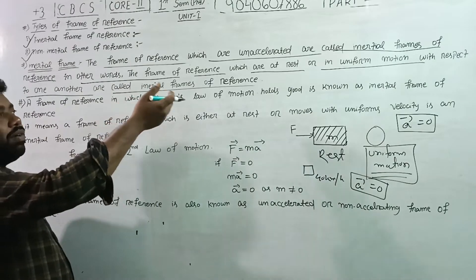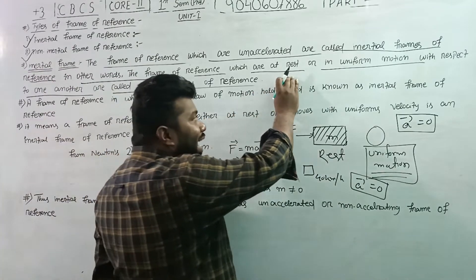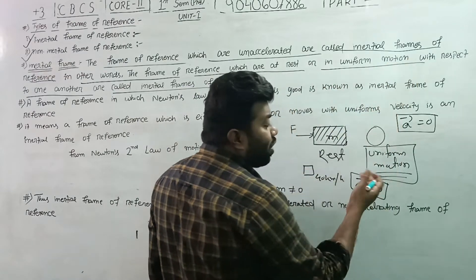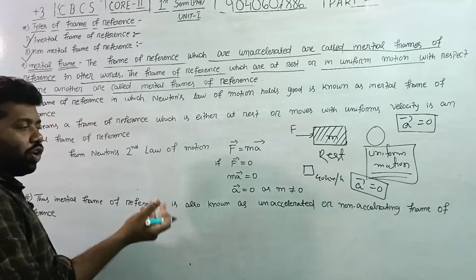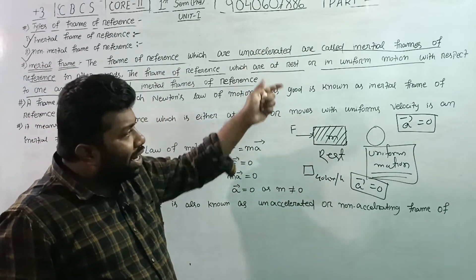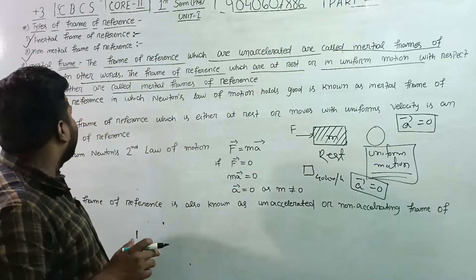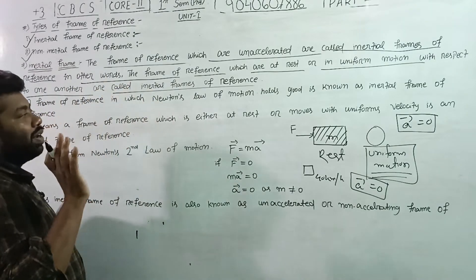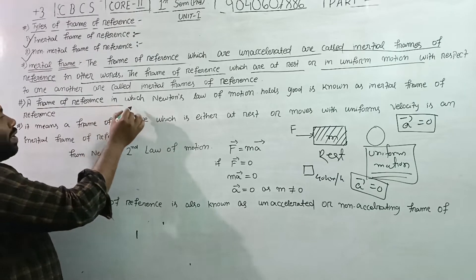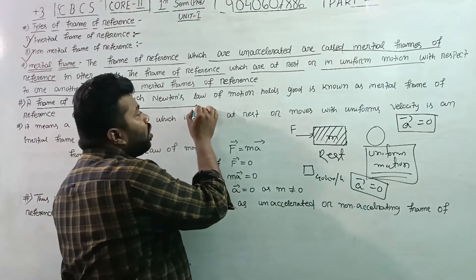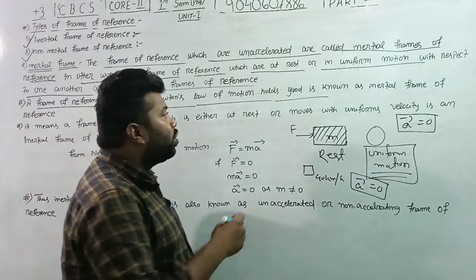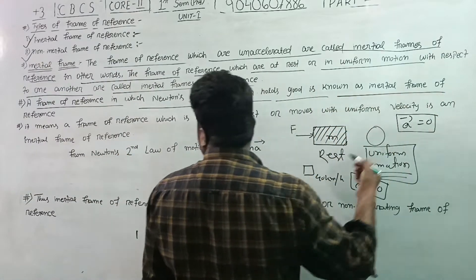In other words, the frame of reference which is at rest or in uniform motion — with acceleration equal to zero — is called the inertial frame of reference. This is the frame of reference in which Newton's law of motion holds good, meaning Newton's law of motion is satisfied.